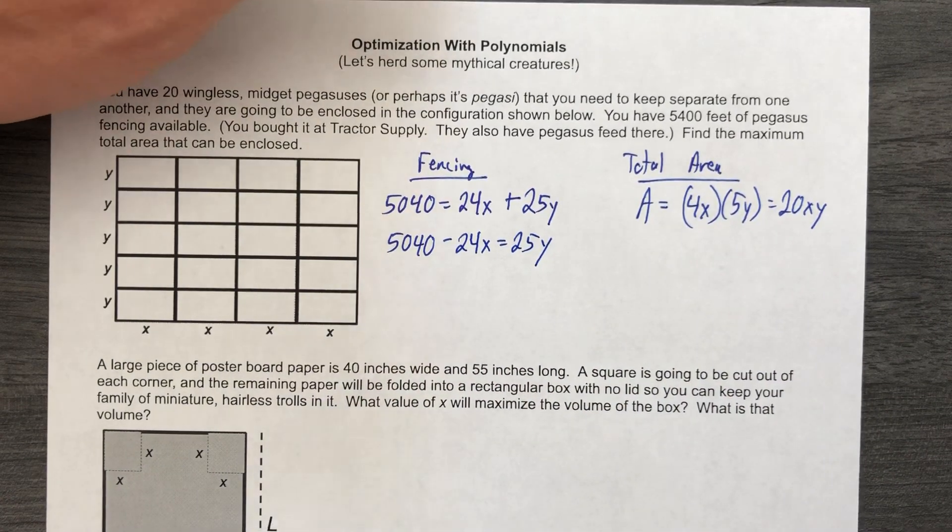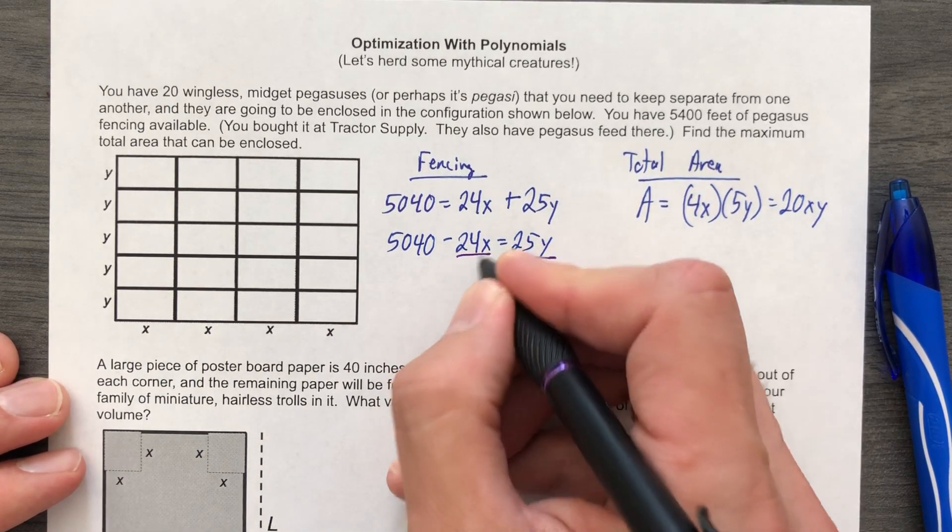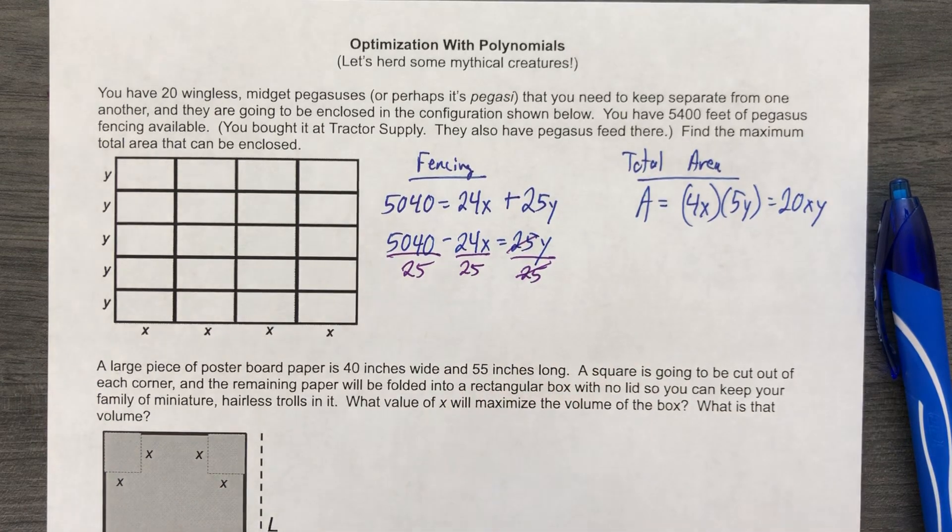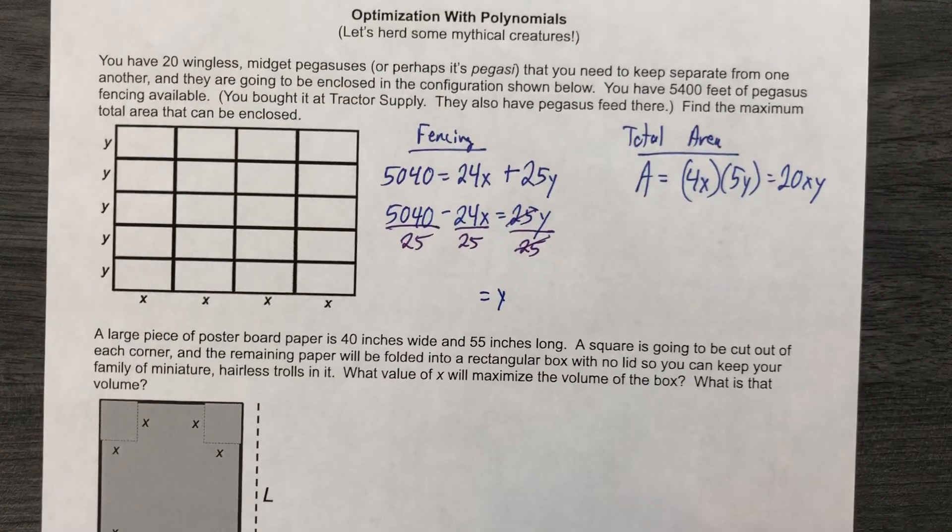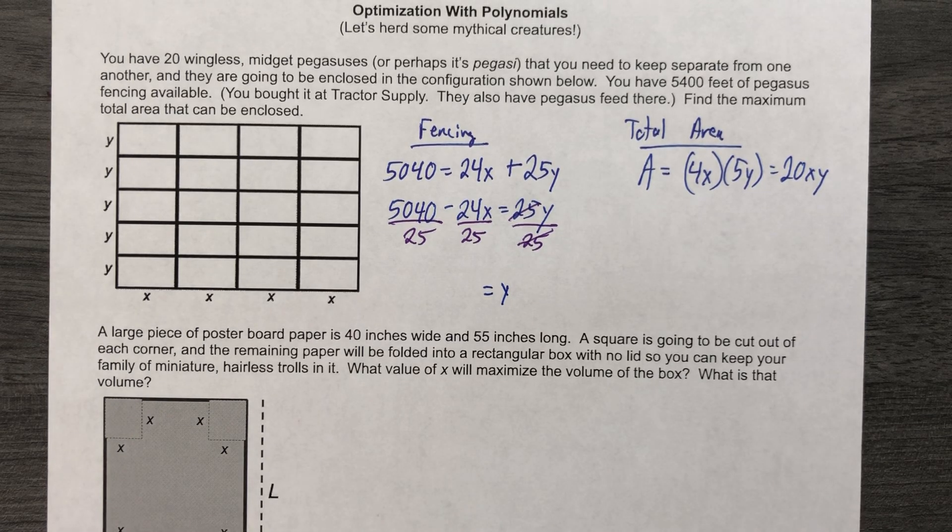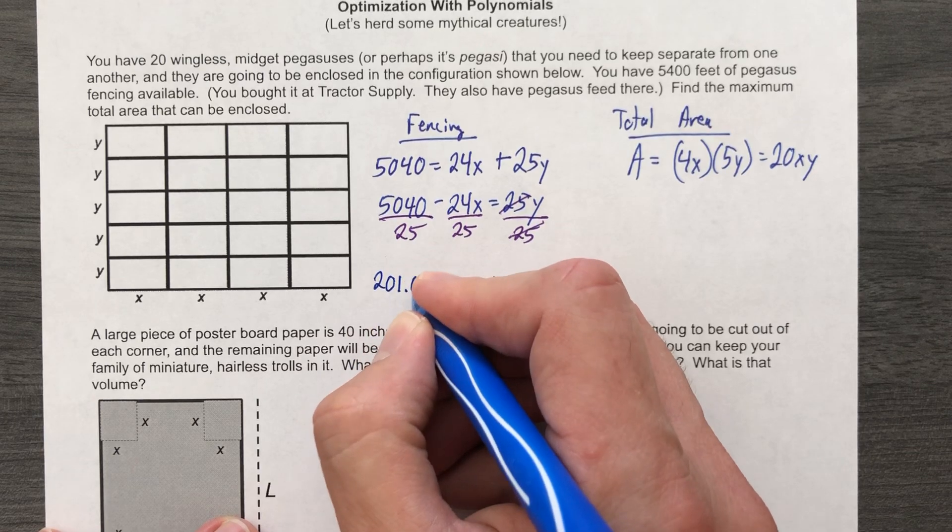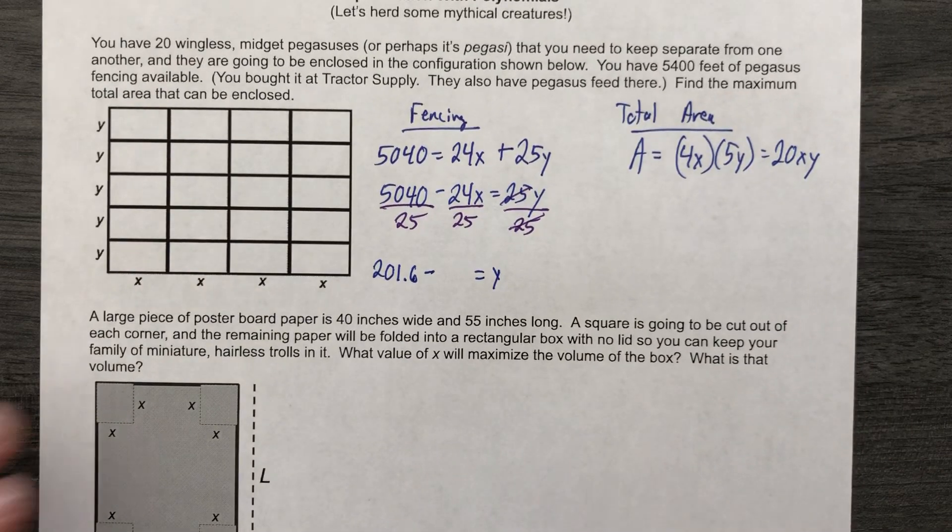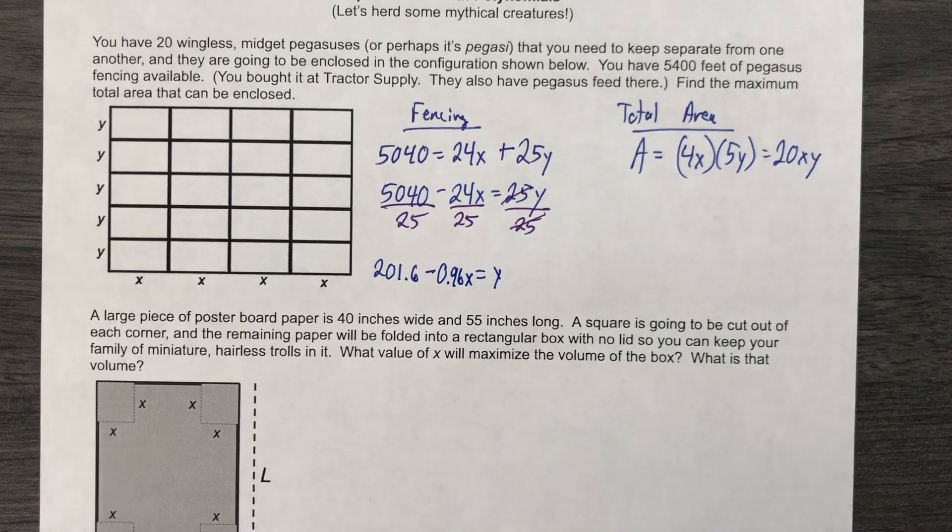Not that it's wrong to do it the other way, but it's gonna get a little sloppy actually. 25Y. There we go. We have that. Now we're gonna divide both sides by 25. So we're gonna divide this by 25 and we're gonna divide this by 25 and we're gonna cancel that. And so now we have Y equals. So 5040 divided by 25. Let's find out what that is. That is 201.6 minus and then 24 divided by 25 and that is 0.96X. Okay, that's great.